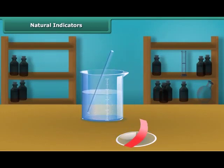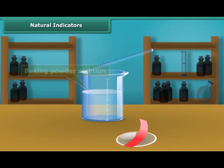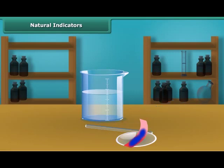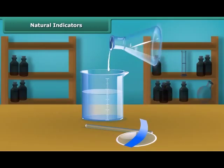Dip a clean stirring rod into the baking powder solution, and then touch the wet stirring rod to the red litmus paper. Red litmus paper turns blue, indicating that the baking powder solution is alkaline in nature.